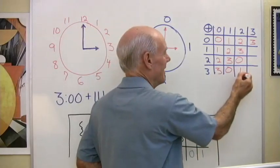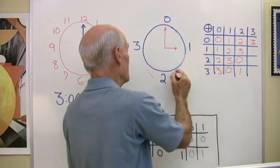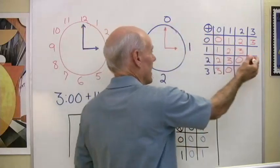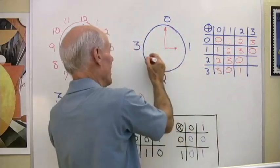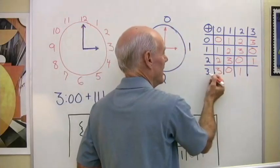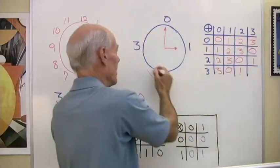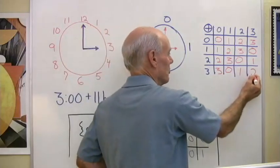And then 1 plus 3, okay that's going to be 1 plus 1, 2, 3, I'll be back at 0. 2 plus 3, so I'm at 2 and I'll add 1, 2, 3, I'll end up back at 1. And then 3 plus 3, so I'm over here at 3 and I add another 1, 2, 3, I end up at 2.